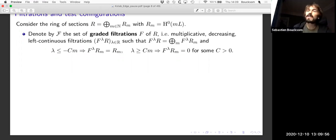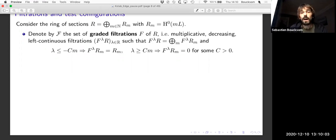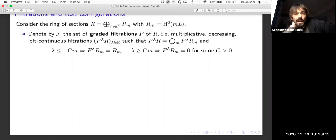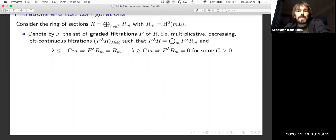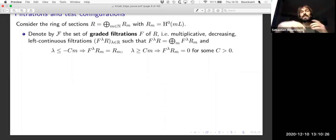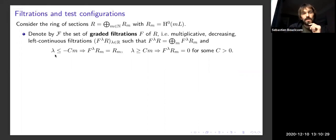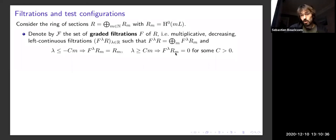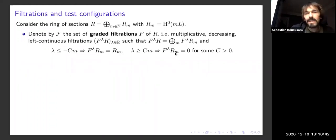A filtration here means a multiplicative decreasing filtration indexed by the reals — a real filtration of the K-algebra R — with left continuity so it can jump to the right. We impose that it is a graded filtration compatible with the grading of R. We also impose a boundedness or linear growth condition: the filtration equals the whole space Rm when you restrict to Rm for lambda sufficiently negative but controlled linearly in terms of M, and similarly becomes zero at a point at most linear in M.